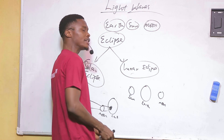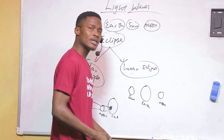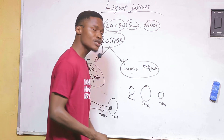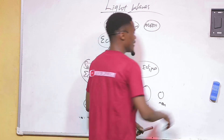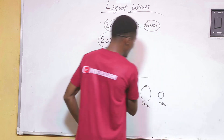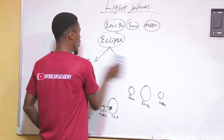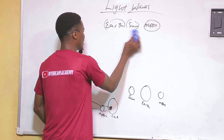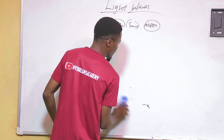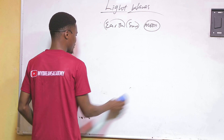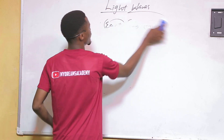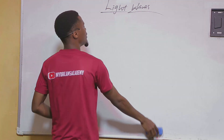The third evidence to show that light travels in a straight line is the formation of images by pinhole cameras.